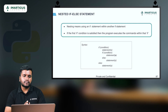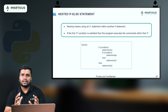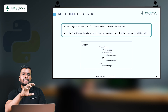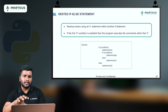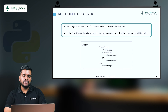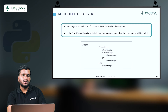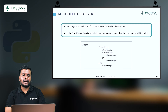A nested if statement is a structural approach where we use an if statement within another if statement. When there are two if statements, we can nest one within the other. This means: if the outer condition is true, we check the internal condition, and only if that is also true does the statement execute. We may have multiple internal conditions within the if block. Let's move to the coding part.